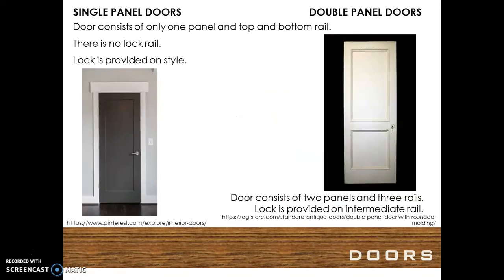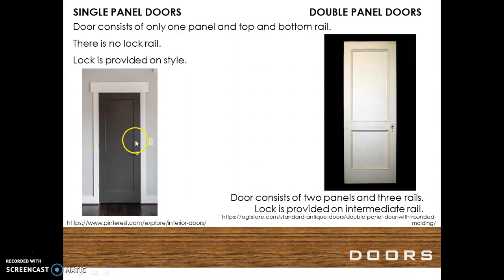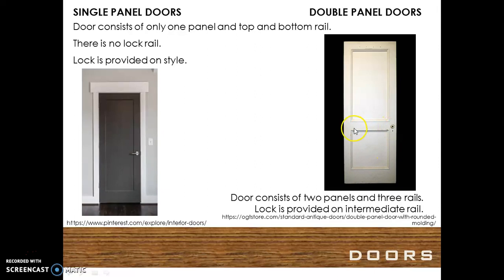Single panel doors consist of only one panel with a top and bottom rail. There is no lock rail provided; the lock is provided on the style. In a double panel door, the door consists of two panels and three rails: top, lock, and bottom. The lock is provided on the intermediate rail, also known as the lock rail.